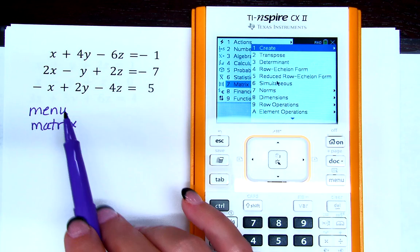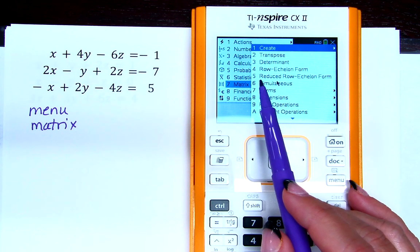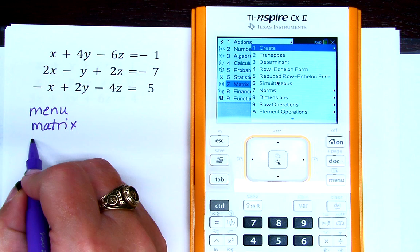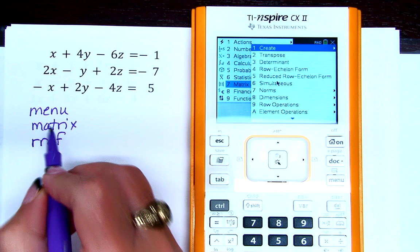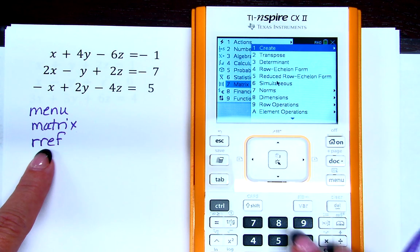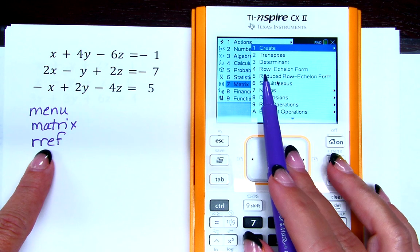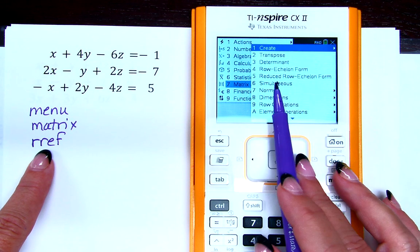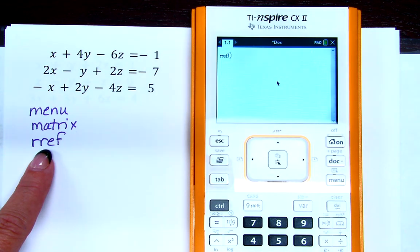So after we choose menu and matrix, the first thing we're going to choose is reduced row echelon form. When you press it, it's going to show up as RREF on your calculator. Please don't confuse it with just row echelon form because that's different. We need reduced row echelon form.